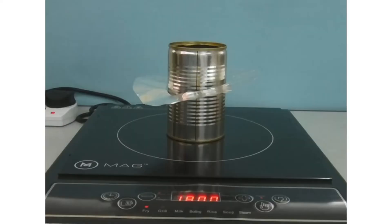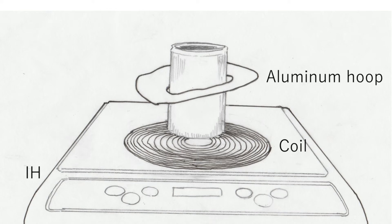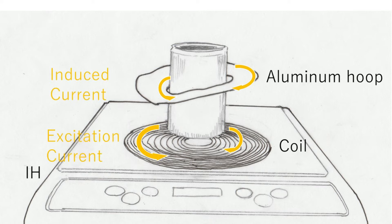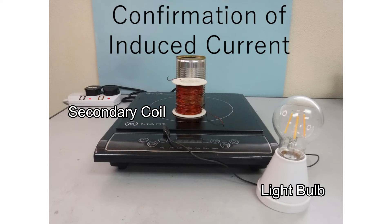When the IH is turned on, the aluminum hoop placed on the IH floats because the excitation current of the IH generates the induced current in the aluminum hoop. Next, put the secondary coil on the IH and light a bulb with the induced current.